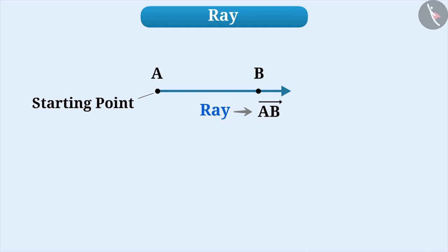Keep in mind that while giving a name to the ray, we write the starting point first. Here, the ray starts from A and goes to infinity through B. Therefore, the name of this ray will be AB. In this way, we can identify the starting point of the ray by looking at its first letter.